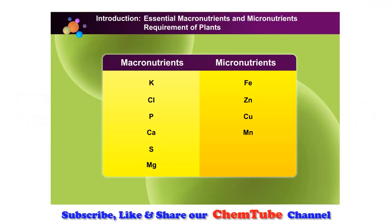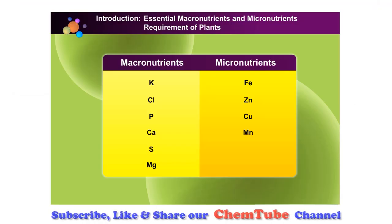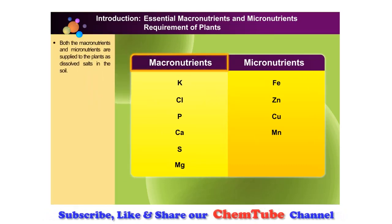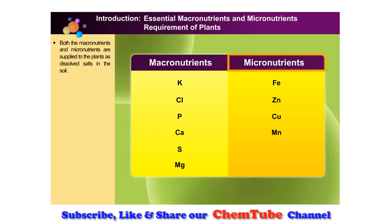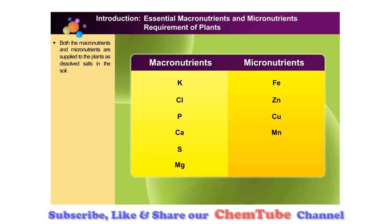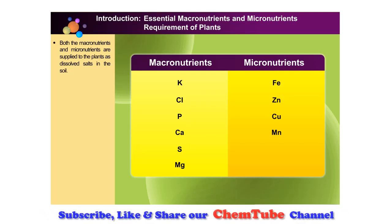The chart shows what minerals are needed by healthy green plants. Macronutrients are usually required in large amounts and micronutrients in extremely small quantities. Both nutrients are supplied to the plants as dissolved salts in the soil.